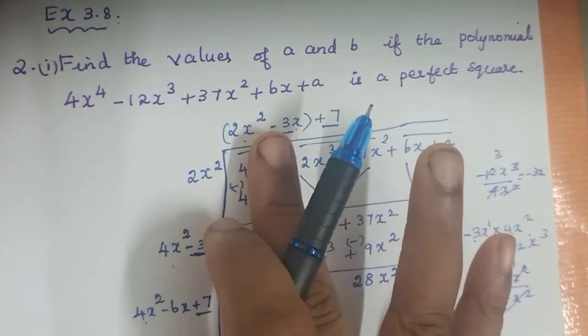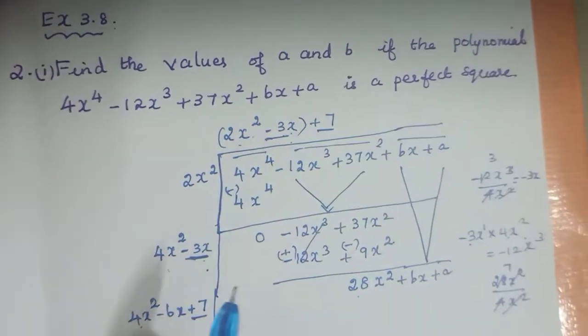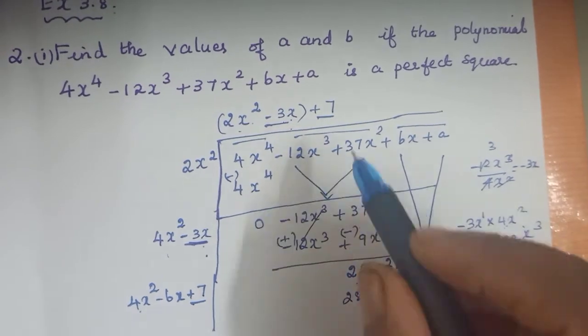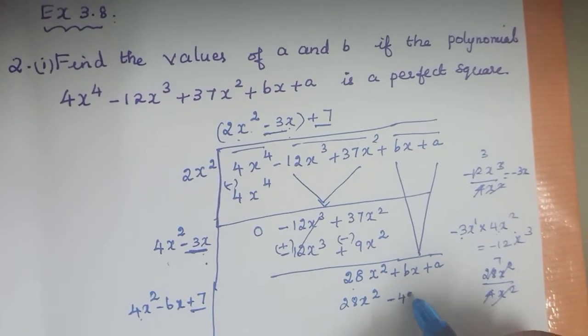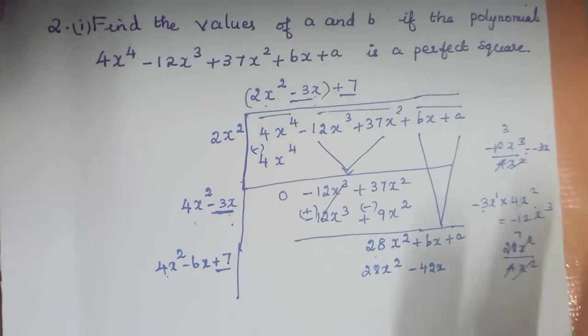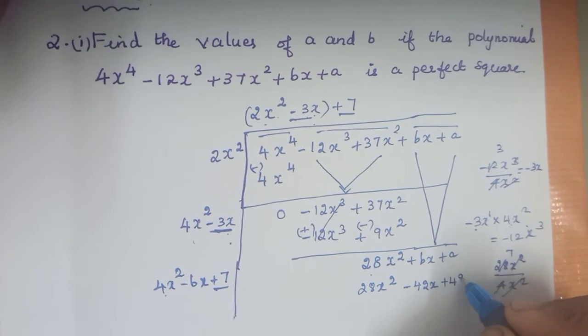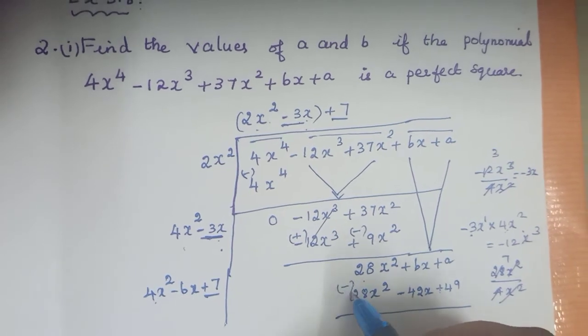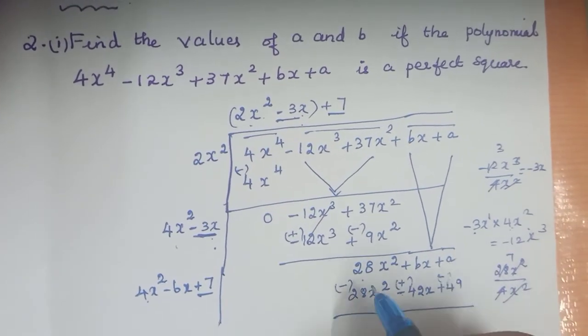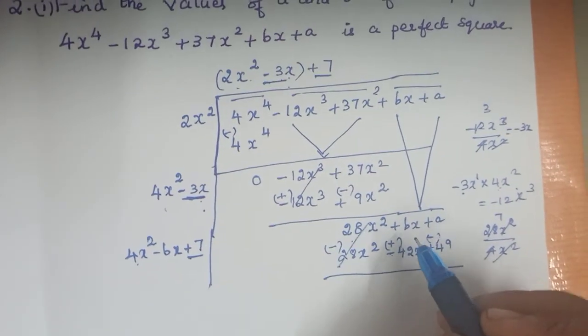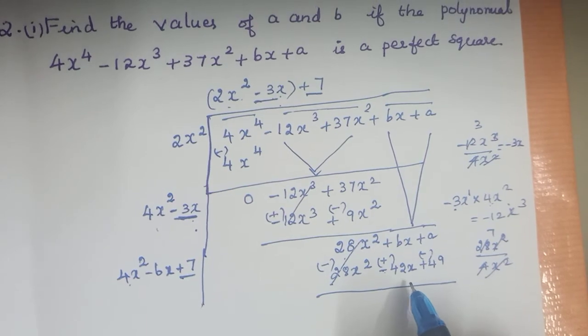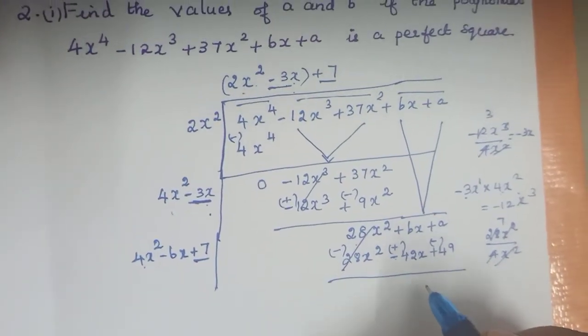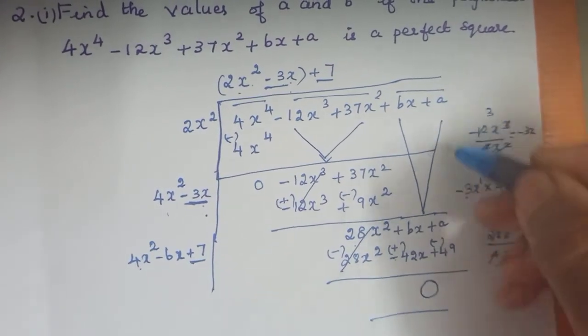Now multiply 2x square minus 3x by 7. 7 into 4x square gives 28x square. 7 into minus 6x gives minus 42x. Sign is very important. 7 into 7 gives plus 49. Now do the subtraction: plus to minus, minus to plus. The 28x square cancels. We have bx plus 42x, and a minus 49.